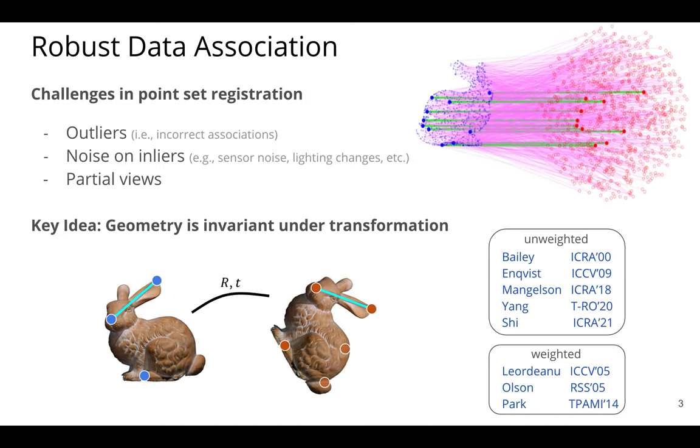For simplicity, we'll focus on point clouds here. Shown in the upper right hand corner are our two point clouds, red and blue. And the challenge here is to find these correct green associations amongst all of these incorrect magenta associations. And it's difficult because there are outliers, there's noise on the inliers, and there's partial view of the data.